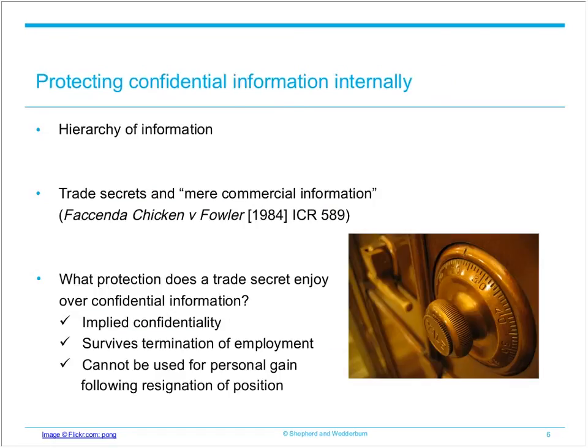The first issue to think about is what makes the information confidential. Broadly, when thinking about confidentiality, you can split business information into three categories. This is useful because it helps determine the protection likely to be afforded and any remedies available for breach of the duty of confidentiality. First are trade secrets, which sit at the top and are afforded the greatest protection. Second is confidential information, which has some but not all of the features of a trade secret and is not given the same level of protection. Finally, there is other information of the employer that is not confidential at all.